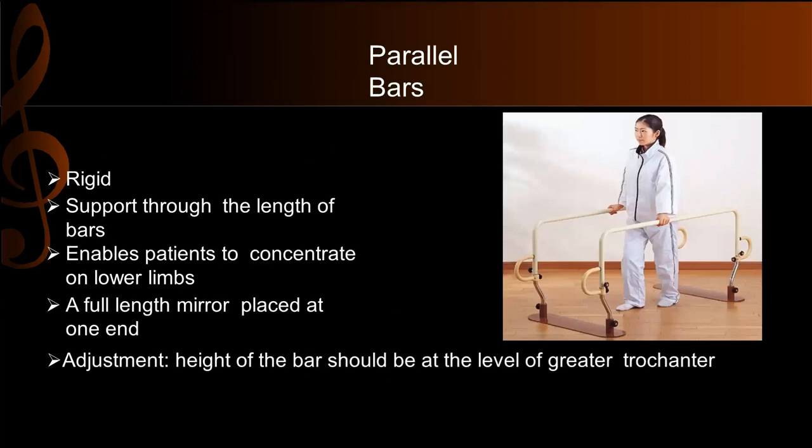Parallel bars are rigid bars that provide support through the length of the bar. You can see them commonly in mirror therapy setups. The mirror is placed in front so the patient can concentrate on lower limb movement. The upper extremity is supported and locked, so the patient can use the lower limbs for ambulation and movement.